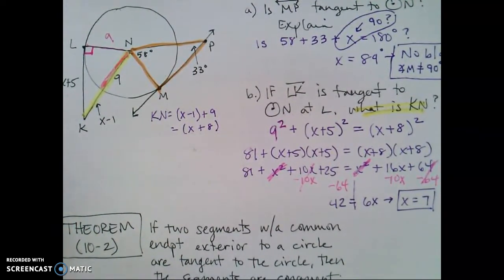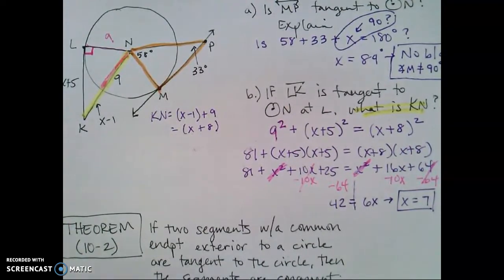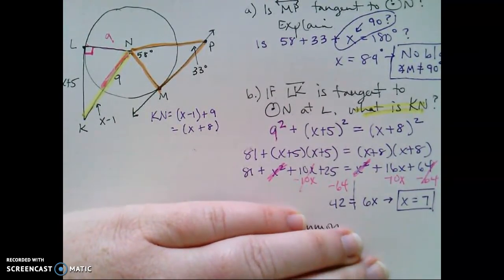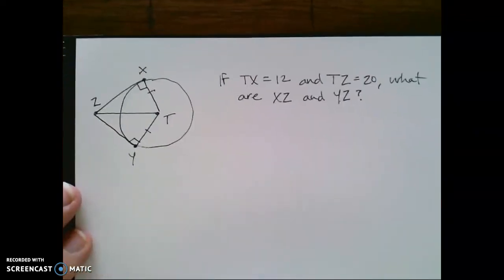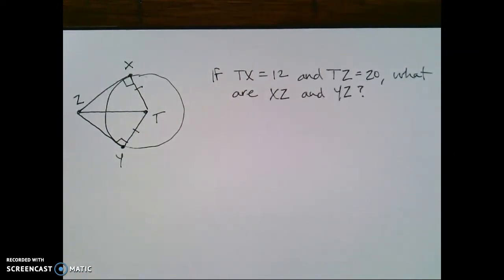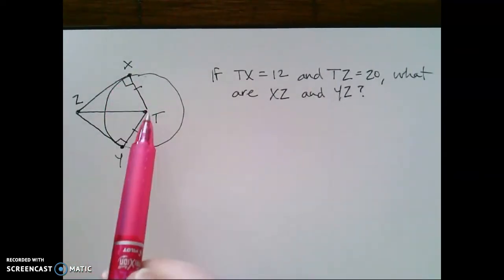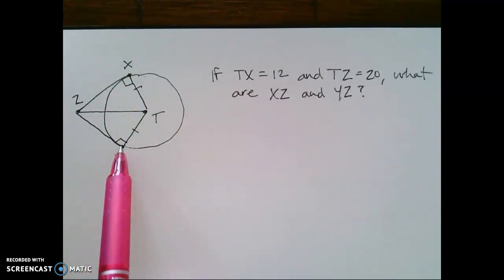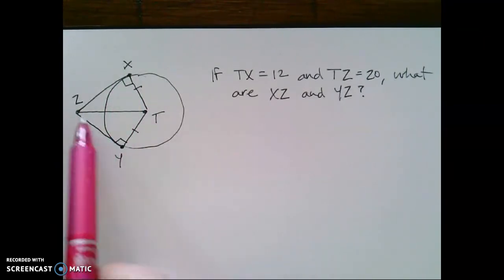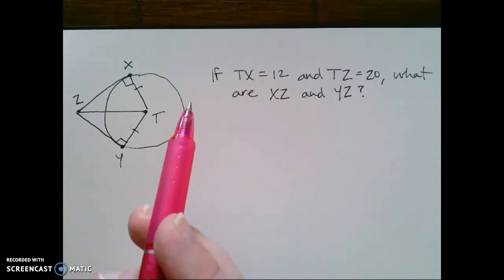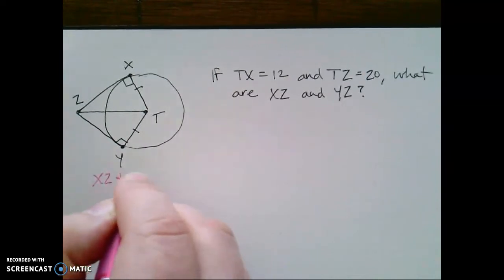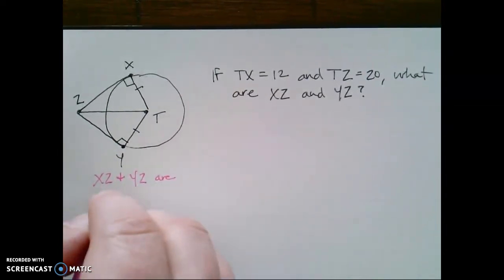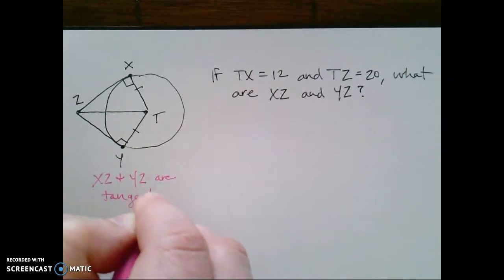All right. So we're going to wrap up section 10.2. Now my notes, I got them out of order from your notes. So I'm going to hold off on that for a second. We'll come back to that theorem. And we're going to take a look at this problem. Now, this is what I'm given. The figure says that I've got radii that are congruent, that I'm dealing with two right angles, which makes yz and xz tangents. So because of the information that I'm given, xz and yz are tangents.